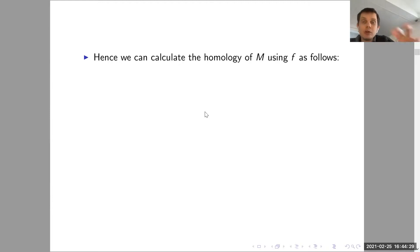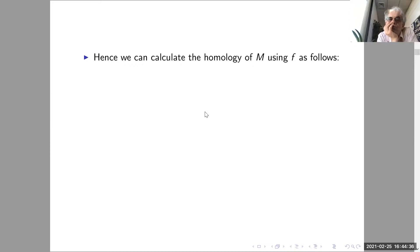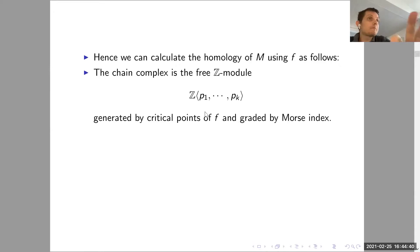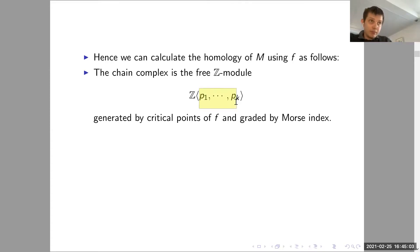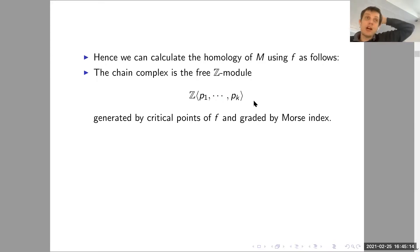Translating this into the world of Morse functions: the Morse homology chain complex, as an abelian group, is the free abelian group generated by the critical points p₁ to pₖ. This abelian group is graded by the Morse index.